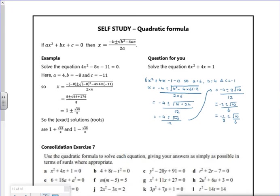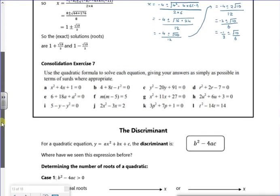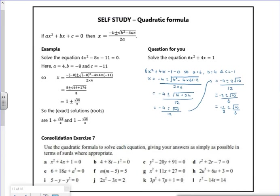Right, so there was a self-study about the quadratic formula to have a go at, and the important bit from that is the b² - 4ac because that tells you if you've got two roots, one root, or no root.